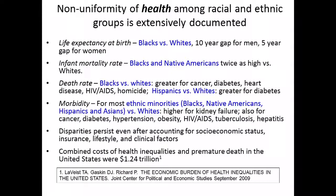Since the Heckler Report, there's been a plethora of data showing non-uniformity of health among racial and ethnic groups in the United States. Looking at life expectancy, there is about a 10-year gap for black men versus whites, and five years for women. The infant mortality rate is higher for blacks than Native Americans. The death rate is higher for a variety of diseases for blacks and Hispanics compared to whites. Most ethnic minorities have higher rates of kidney failure and many other diseases, and these disparities persist even after accounting for socioeconomic status, insurance, lifestyle, and clinical factors.